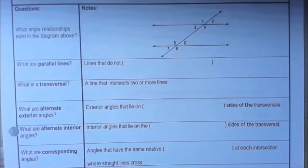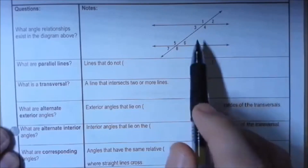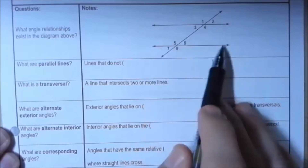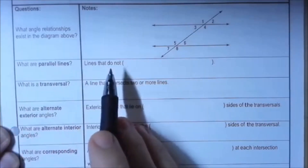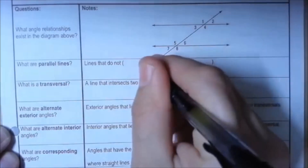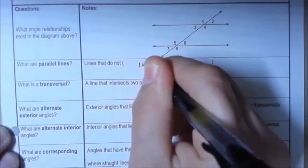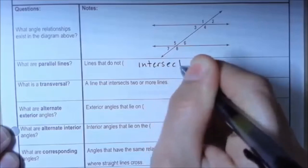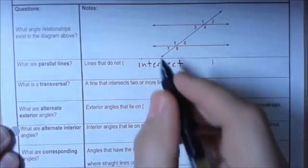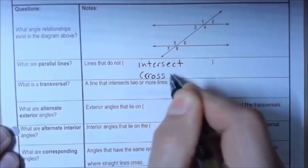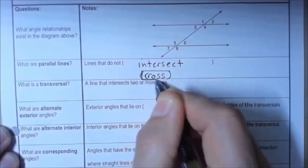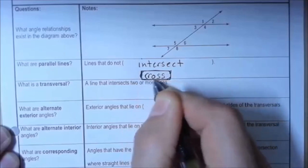In today's lesson we're going to be looking at angle relationships that exist in a diagram with a set of parallel lines and a transversal. First, let's go over a few definitions. Parallel lines are simply lines that do not intersect — another way of saying intersect is that the lines do not cross each other.